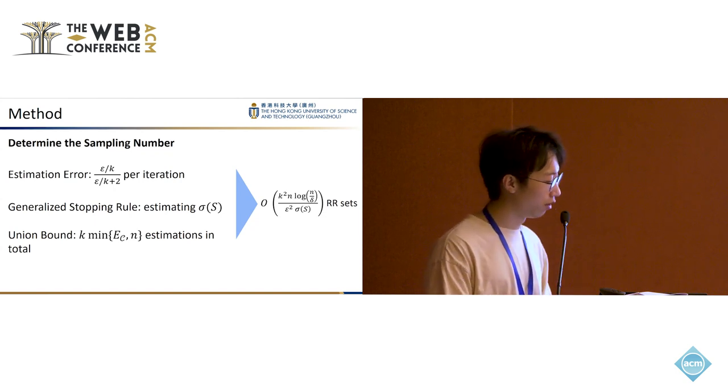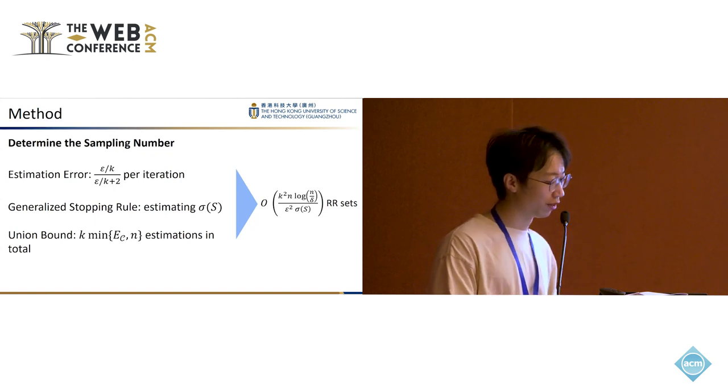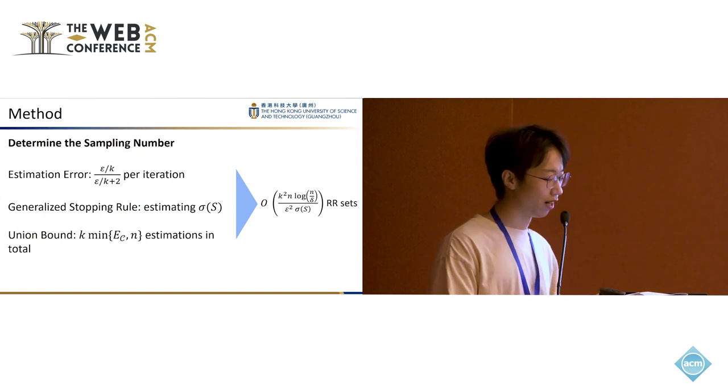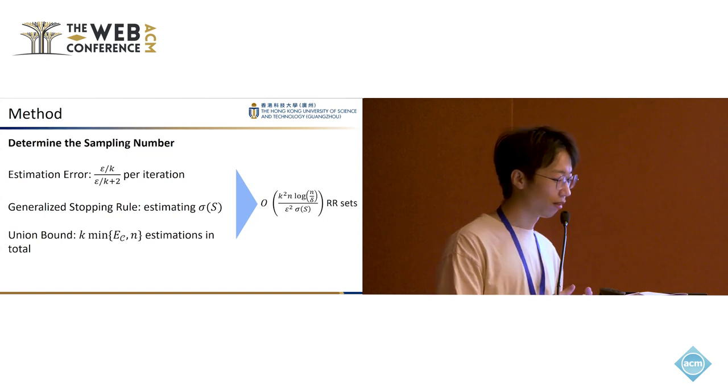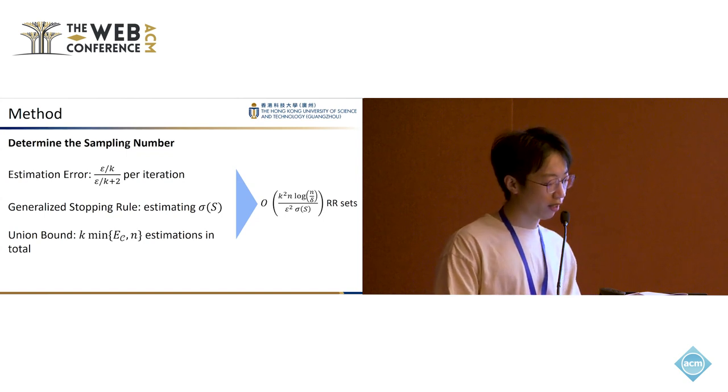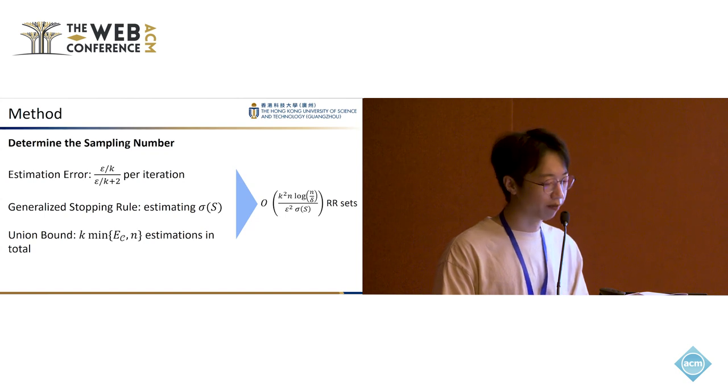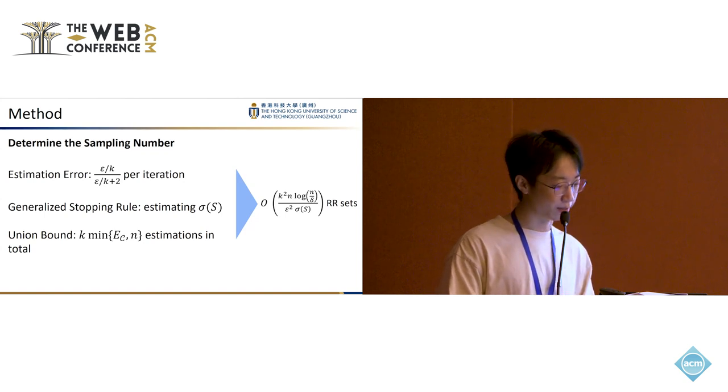Then we use generalized stopping rule to estimate sigma_S. And finally, as we use the same set of RR sets to carry out a lot of estimations, we use a union bound to determine the sampling number.